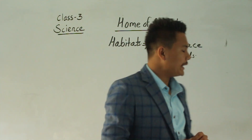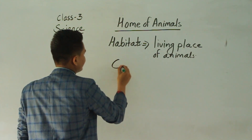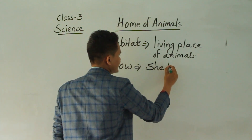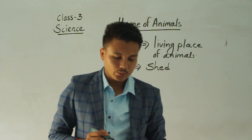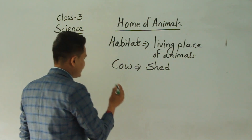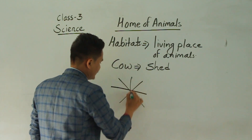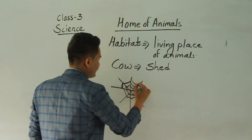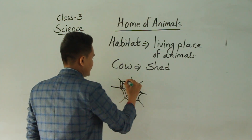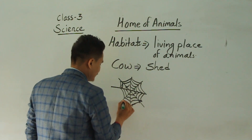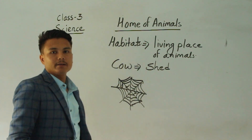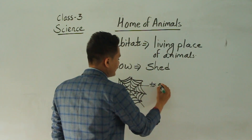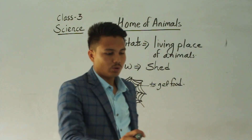So let's talk about animals and their habitats. Do you know where the cow lives? Now, do you know about the spider? Spider makes a web — something that looks like a net. Have you seen a spider web? Spider makes this kind of web, which is the home of the spider. The spider basically makes this web to trap other insects, to get food.